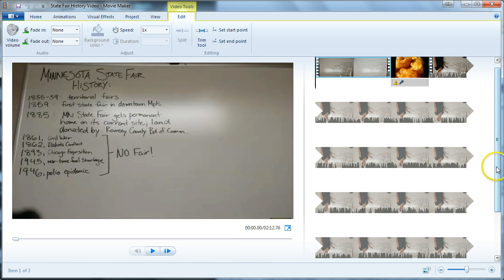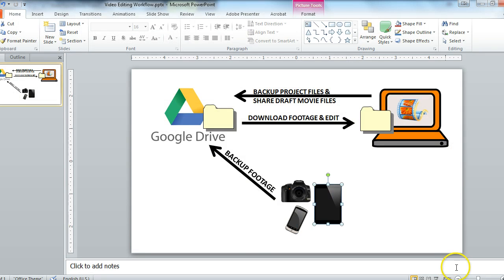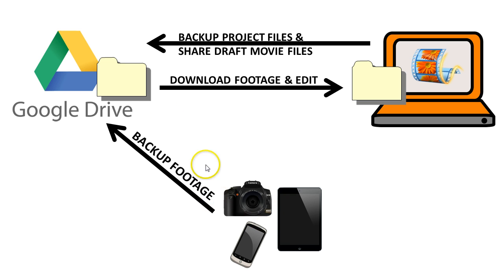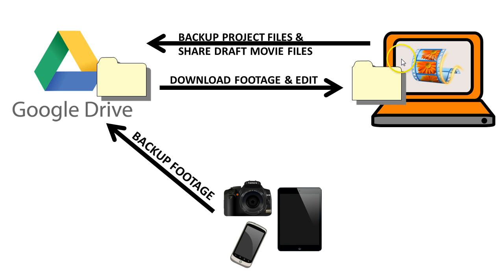That's more or less all you need to know about video file management and editing workflow. Grab your footage off your device, back it up to Google Drive and store it in a separate folder. Put all that footage into a local folder on your machine and edit with Windows Movie Maker. When ready to share a draft, do Save Movie and save an MP4, upload to Google Drive and use the sharing settings. When finished with your final movie, do Save Movie for high definition display and upload to YouTube. Thanks!